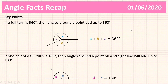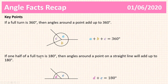Now let's look at our first angle rules. If a full turn is 360 degrees, then angles around a point must sum to 360 degrees. Here we can see we have our point in the middle and lines that come off it — the angles around that point sum to 360 degrees. And if half a turn is 180 degrees, then angles around a point on a straight line must sum to 180 degrees. These are the two first angle facts — very straightforward, very simple. You probably already knew these.